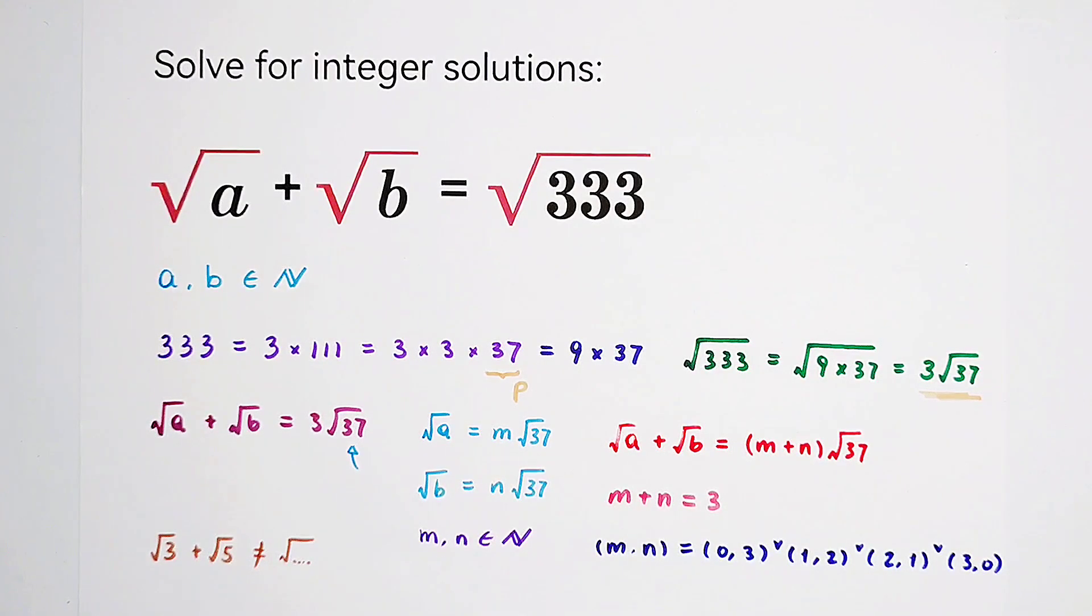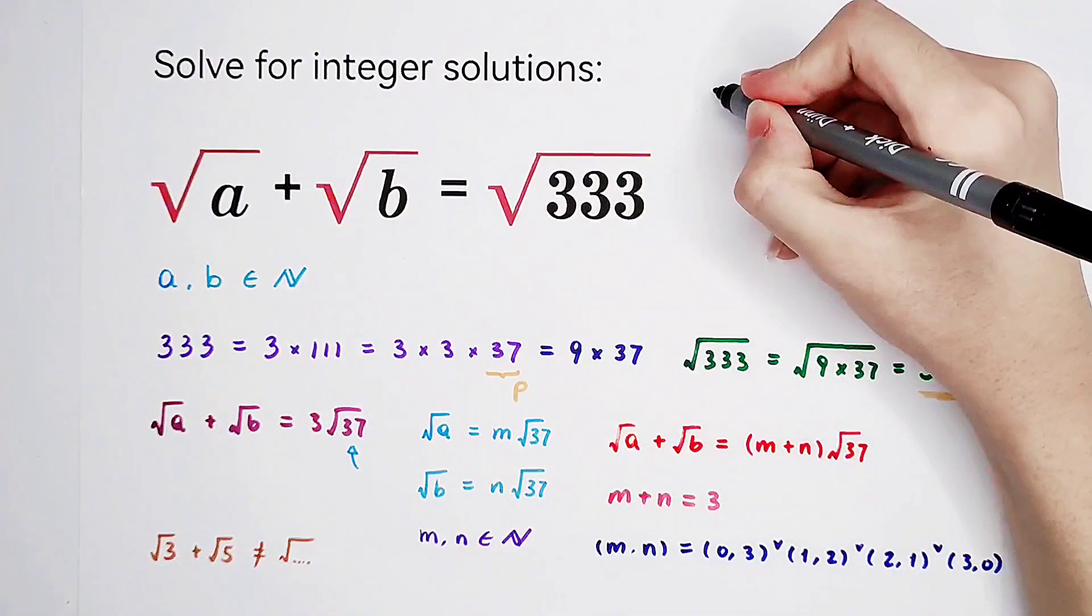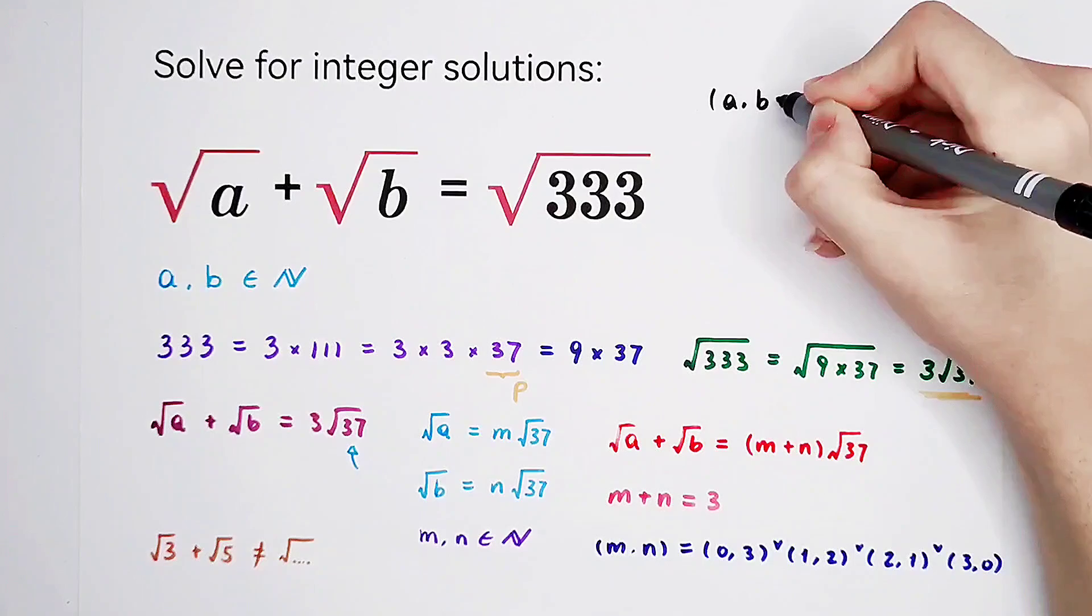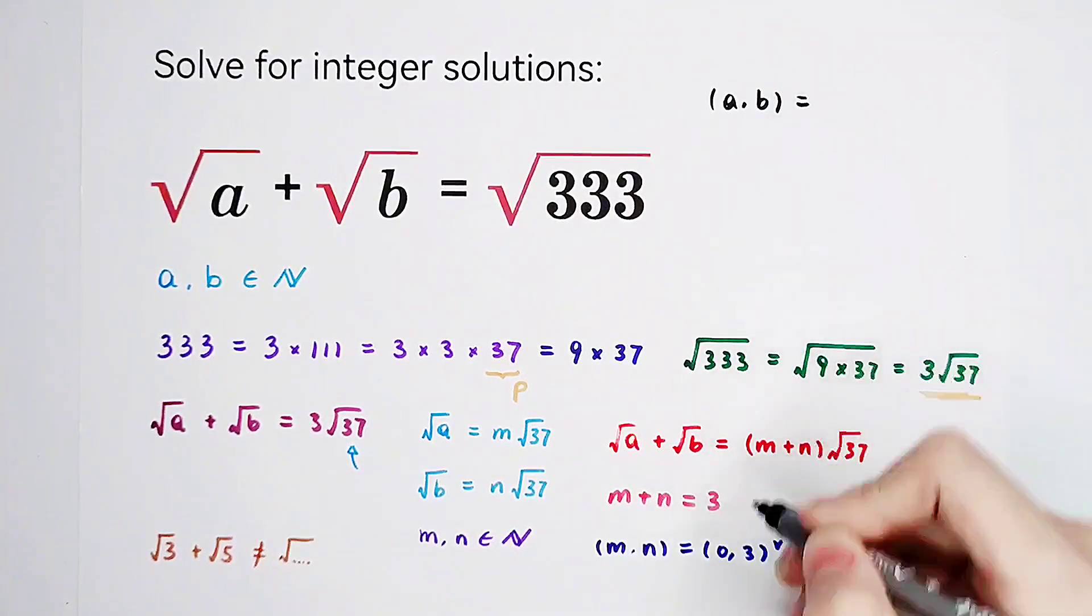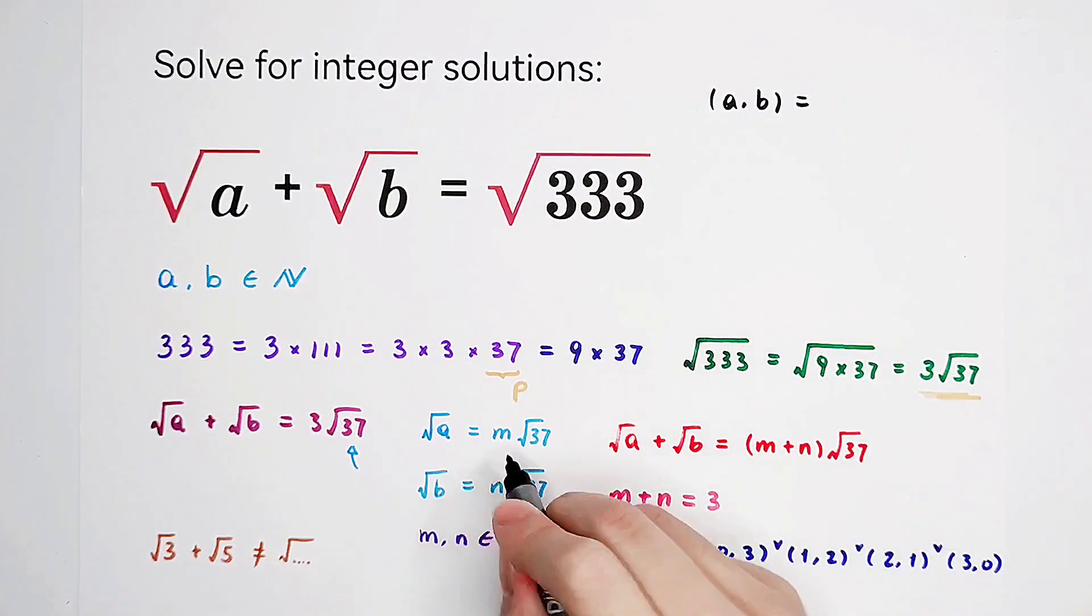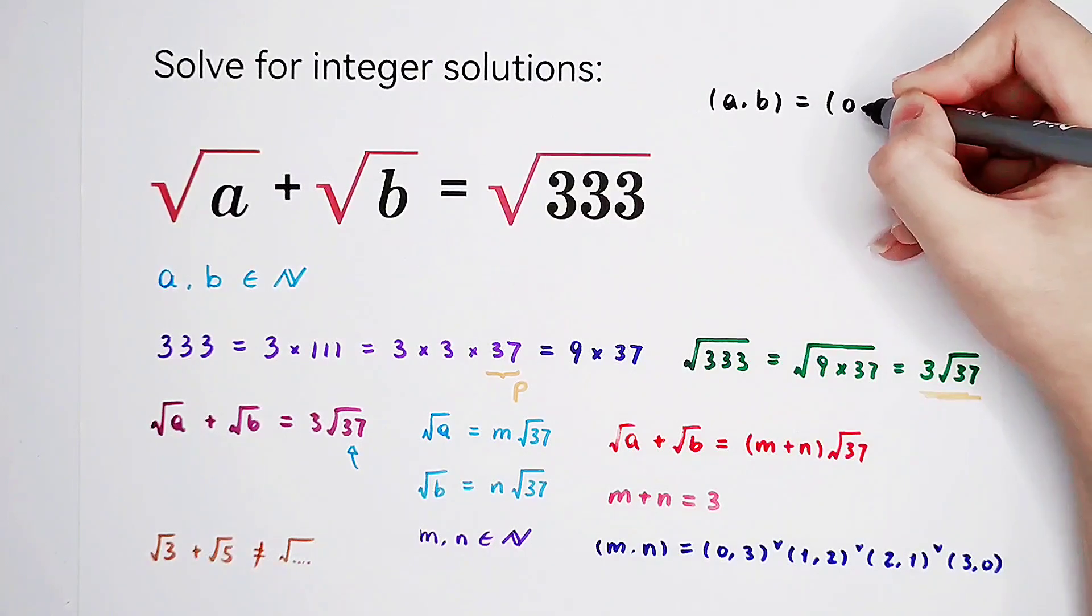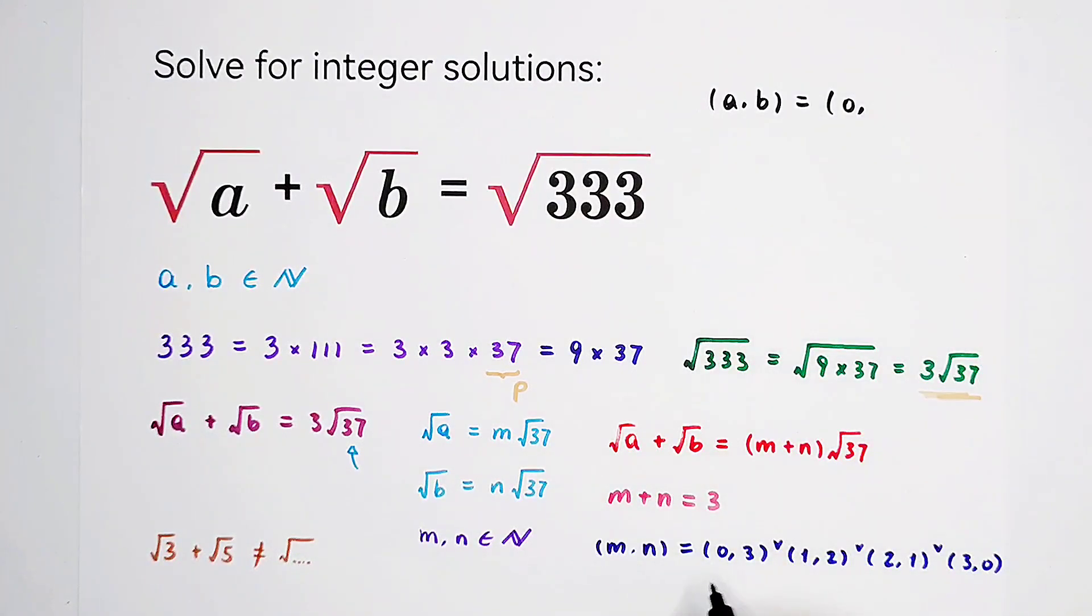So now, for each m and n, there are a pair of solutions for a and b. So now, just evaluate them. m is 0. In this case, n is 3.